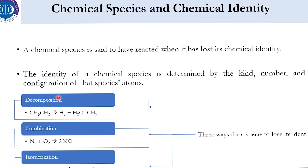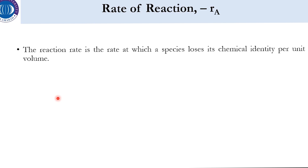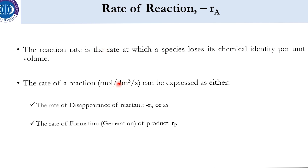There are three ways by which a chemical species can lose its identity: (1) decomposition, (2) combination, and (3) isomerization. These will be discussed in upcoming lectures. Now talking about rate of reaction: the reaction rate represents the rate at which a species loses its chemical identity per unit volume per time. Units can be expressed as moles per cubic decimeter per second, or moles per volume per time.